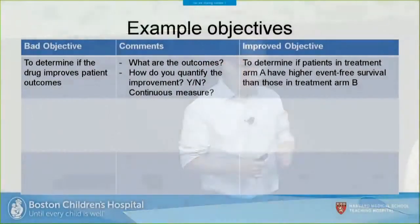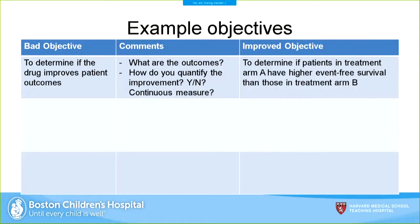I want to give some examples of objectives and suggest improvements. The first example — 'to determine if the drug improves patient outcomes' — is too vague. What outcomes are we trying to improve and how do we quantify improvement? Is it a yes/no threshold, or a continuous measure like 20% better survival at five years or 10 points higher on quality of life? An improved version would be: 'to determine if patients in treatment arm A have higher event-free survival than those in treatment arm B,' where event-free survival is the specific outcome being compared.